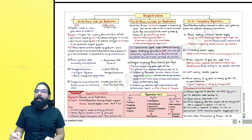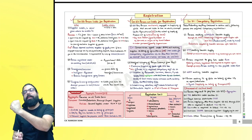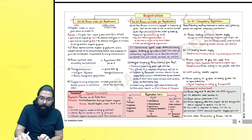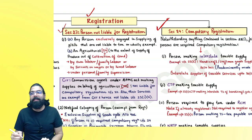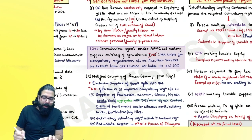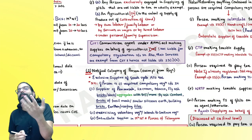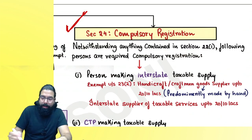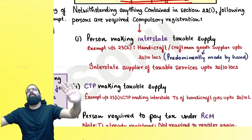Let's get started with the registration chapter — who is liable to take registration, who is not liable, and who is required compulsory registration. We will first learn about those people who are required compulsory registration. In the registration chapter, the government has also used power under section 23 to notify some people who are exempted from compulsory registration.